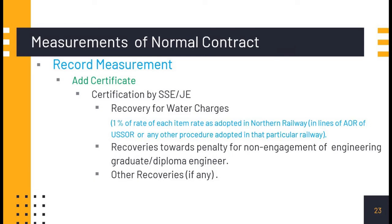After entering measurements, we add our certifications — the 12 standard certifications plus the 13th option for our railway's own certifications. In that section, we can enter recovery for water charges. For example, in Northern Railway there is a practice of recovering 1% of the rate for each item for water charges, as allowed in the USSOR analysis of rates. In certain railways, water is measured using flow meters and a charge is fixed accordingly. We can also mention recoveries towards penalty for non-engagement of an engineering graduate or diploma engineer, and any other recoveries.